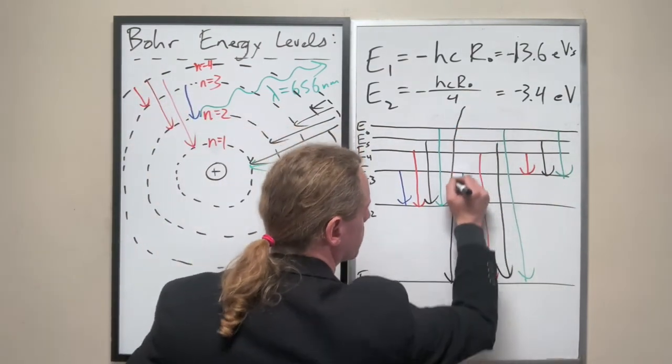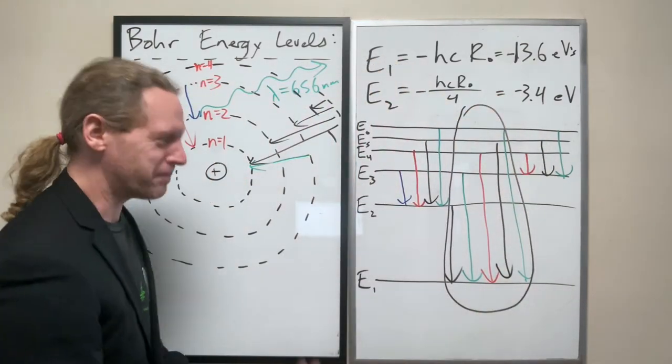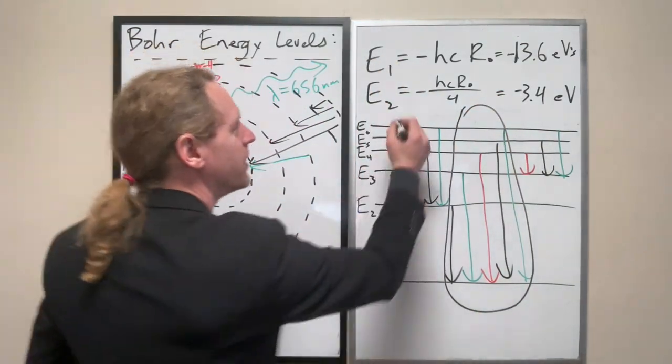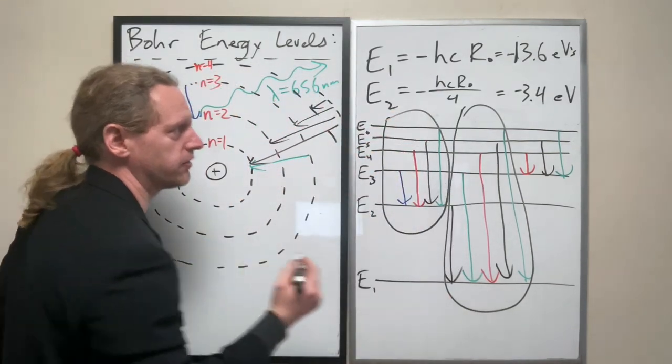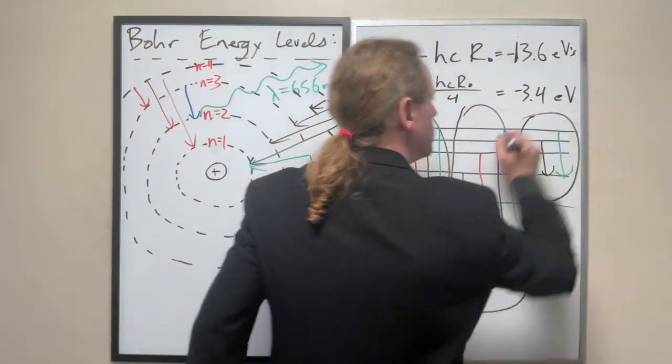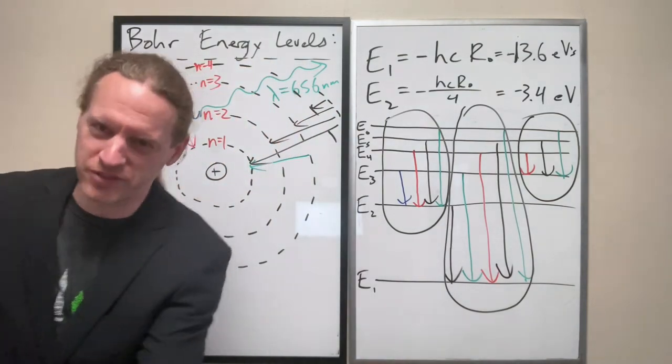These transitions form a mathematically predictable series. These transitions form a mathematically predictable series. These transitions form a mathematically predictable series. And this is what we started our lecture with.